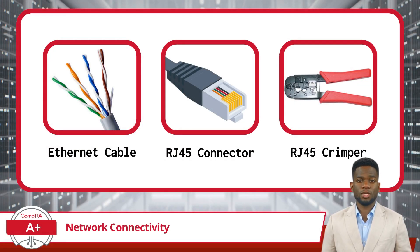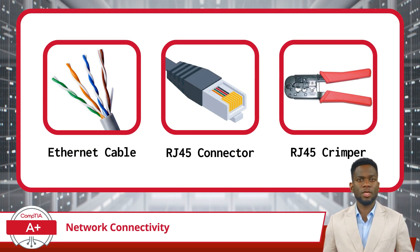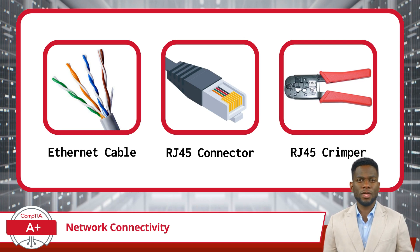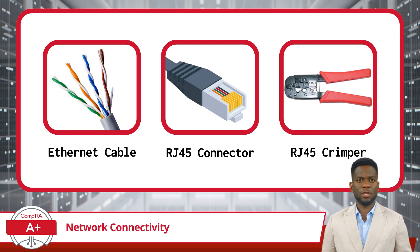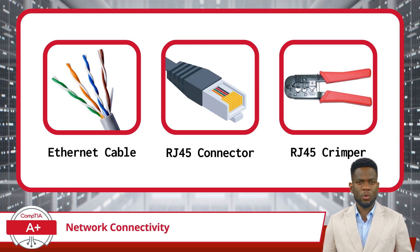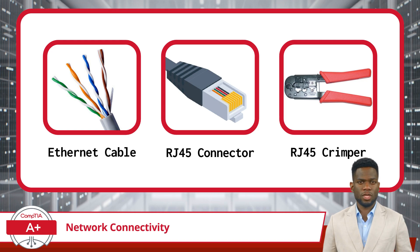Ethernet cables typically consist of eight copper wires, which are twisted into color-coded pairs. At each end of the Ethernet cable, RJ45 connectors are attached. The RJ45 connector features eight pins or positions into which wires are inserted, allowing for robust connectivity. To complete the connection, a crimping tool designed for RJ45 connectors is used to attach the connectors securely to the Ethernet cable.